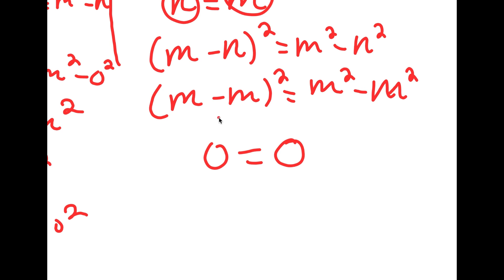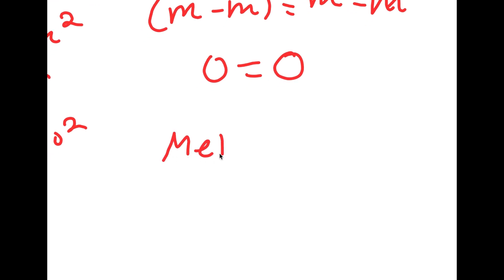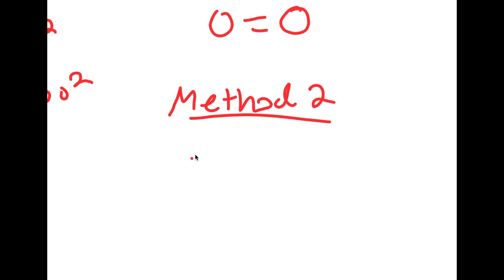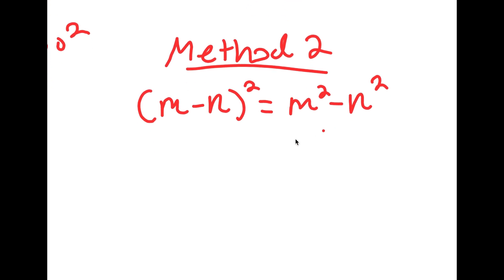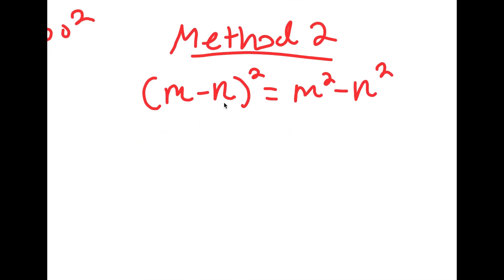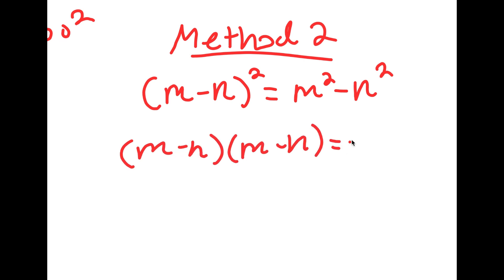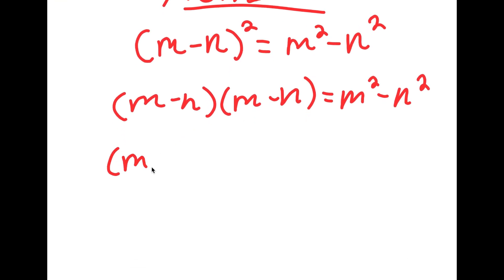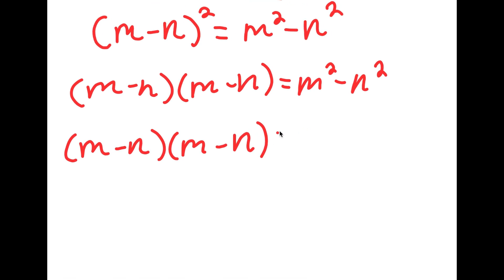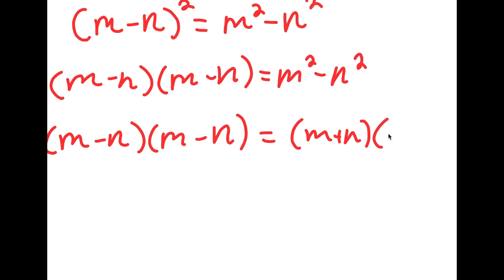Now I'm going to use a different method to solve this problem. Method 2: first let's rewrite the equation. We have m minus n squared is equal to m squared minus n squared. I'm going to again expand m minus n squared to m minus n times m minus n. And I'm going to rewrite m squared minus n squared as m plus n times m minus n.